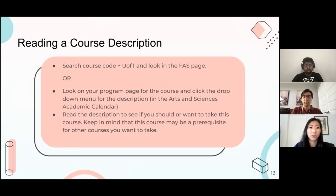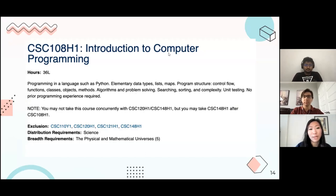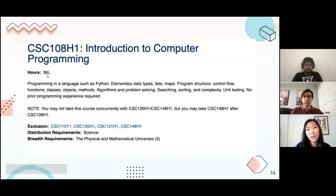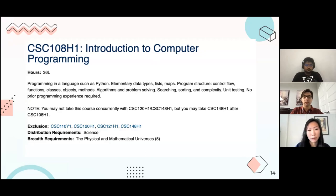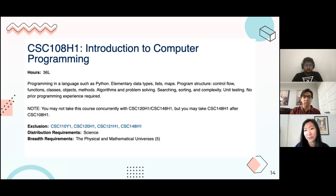Here is what one of the course descriptions looks like — this one is for CSC 108, Introduction to Computer Programming, Kavish's favorite course from first year. The first thing is the course code and name. Next are the hours: 36L stands for 36 lecture hours for this half-year course, which means typically around three hours a week. The description mentions programming in a language such as Python, and importantly it notes 'no prior programming experience required,' meaning anyone can take it. Some other courses will say prior programming experience is required, which is important to keep in mind.